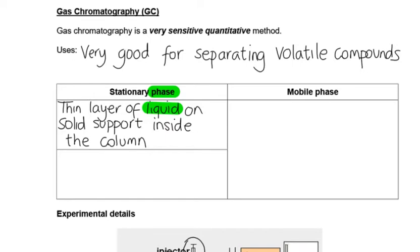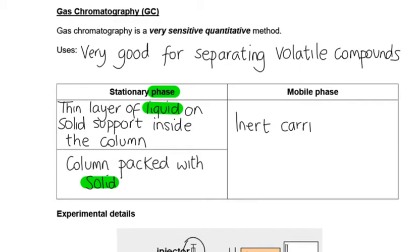Or you could have it where the column is packed with some solid. Again it might be powder, things have got to be able to get through, so it might be beads. So we could have a solid stationary phase, or a liquid stationary phase. And if you go back to the introduction video, there were slight differences in the separation, depending on liquid or solid stationary phase. Our mobile phase is our inert, unreactive carrier gas, a gas that's going to carry everything. So it's a gas that is our mobile phase, things like neon, nitrogen, helium, these kind of things.